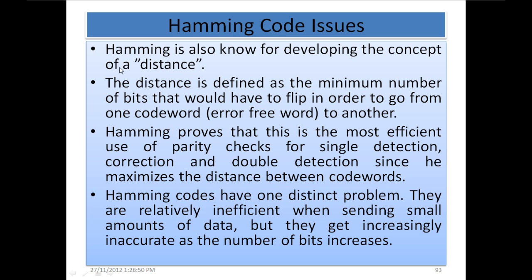Hamming codes have one distinct problem. They are relatively inefficient when sending small amounts of data, but they get increasingly inaccurate as the number of bits increases.